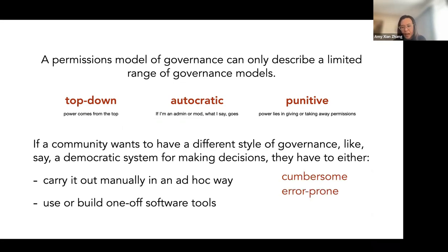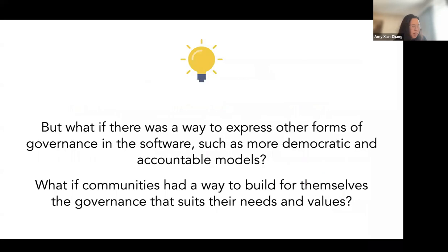If a community wanted a more democratic style of decision-making, they have to either do it manually — having conversations using platform comments to do this work — or use one-off software tools like a Slack poll or Zoom poll. These can be cumbersome, error-prone, and hard to maintain. So my provocation is: what if there was a different way? What if we could express other forms of governance directly into the software we use every day — more democratic or more accountable forms — and what if communities could design governance that suits their own needs and values?